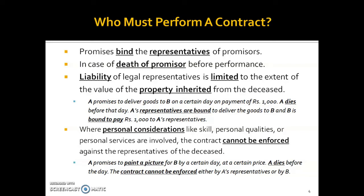However, there is a very important exception to this rule. Where there are contracts of personal consideration — where a person's skills or personal services are used — for example, painting, cooking, lawyers, doctors, engineers, architects — these are contracts where a specific individual's personal skill, personal quality, or personal services are hired. In that case, the contract cannot be enforced against the representative of the deceased.